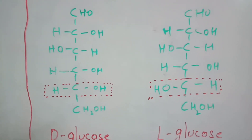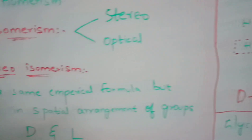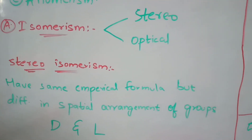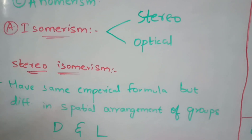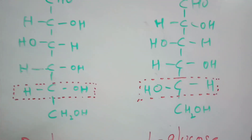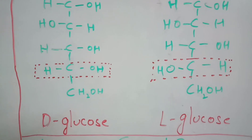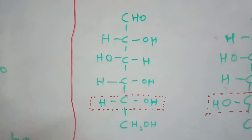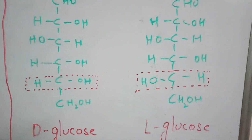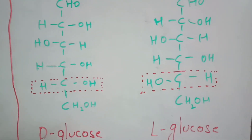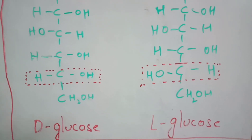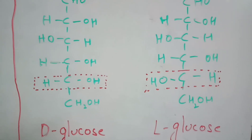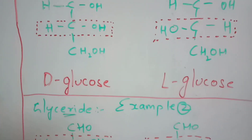As stated in the definition, D and L isomers have the same empirical formula but differ in the spatial arrangement of groups. D-glucose is the original structure; after the spatial rearrangement, L-glucose is formed. The same concept applies to glyceraldehyde: D-glyceraldehyde has H on the left and OH on the right, while L-glyceraldehyde is the mirror image.